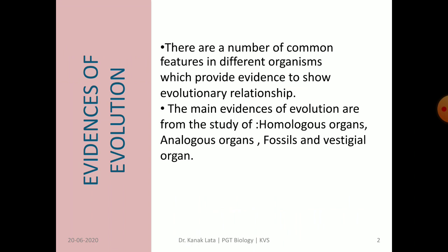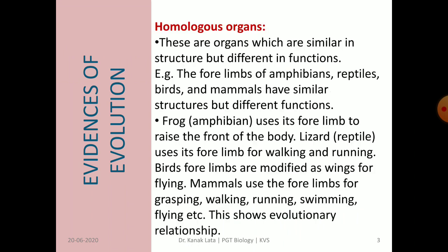In different organisms, there are many common features, and this provides evidence to show evolutionary relationships. There are a lot of evidences of evolution. The main evidences of evolution are from the study of homologous organs, analogous organs, fossils, and vestigial organs. Let us discuss them one by one. The first evidence is from homologous organs.